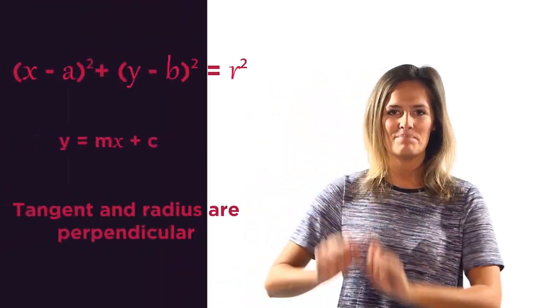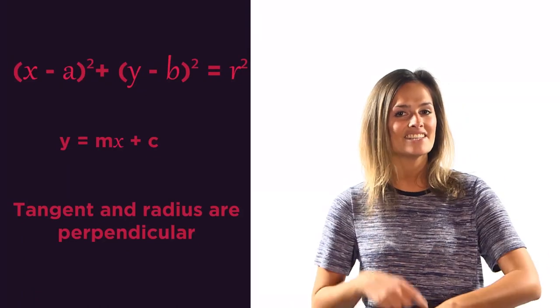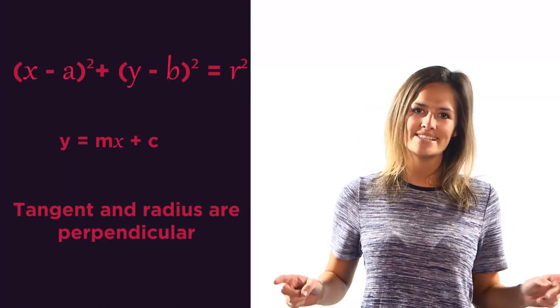So that's all you need to know about tangents to circles. You just need to use the centre of the circle, the point of the tangent and the knowledge that the tangent and the radius are always perpendicular.